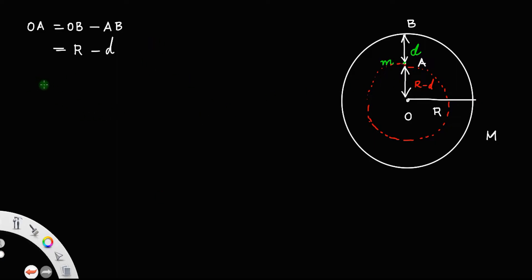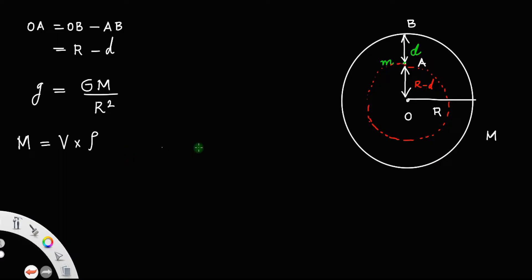We have gravity at the surface g = GM/r². This is the expression for gravity on the surface. And the mass of the earth equals volume times density. Let us assume the earth to be a uniform sphere with uniform density. So mass equals, since it is a sphere, 4/3 π r³ times ρ. That will be our mass.